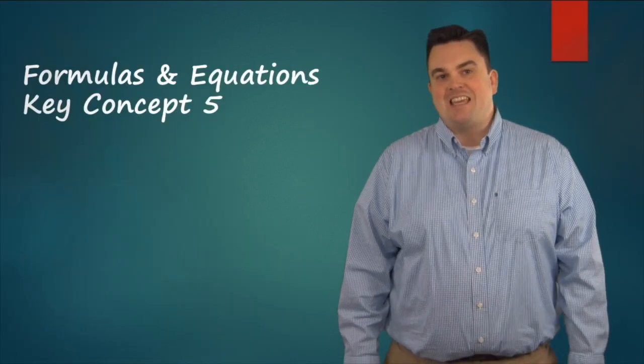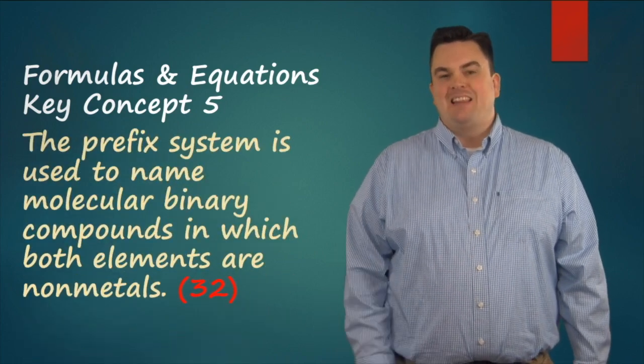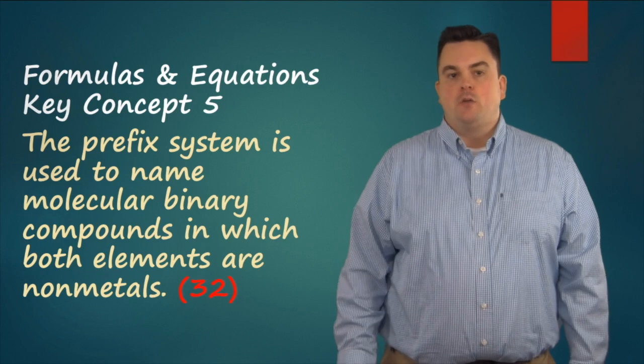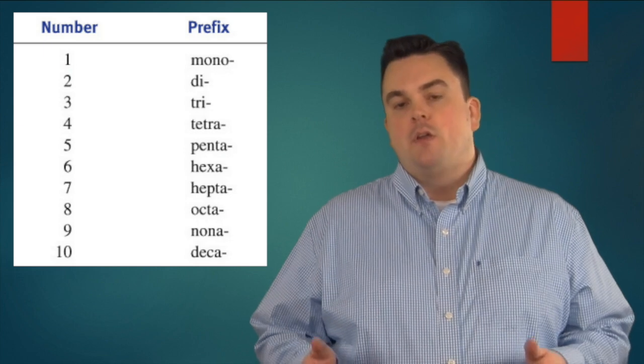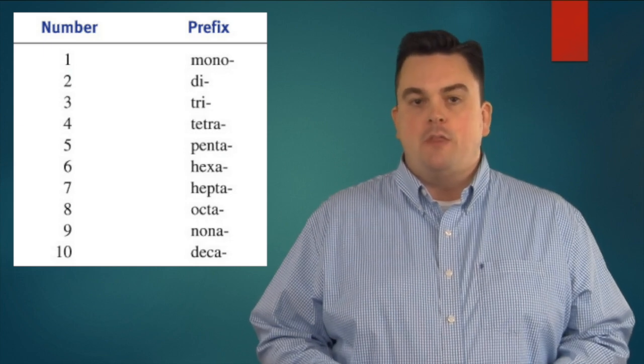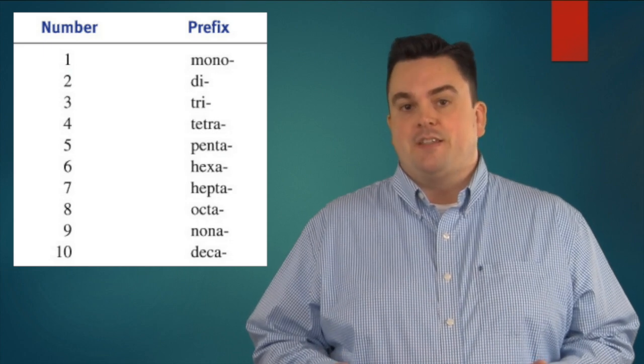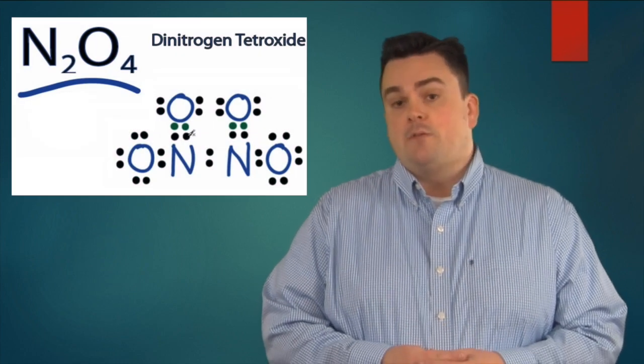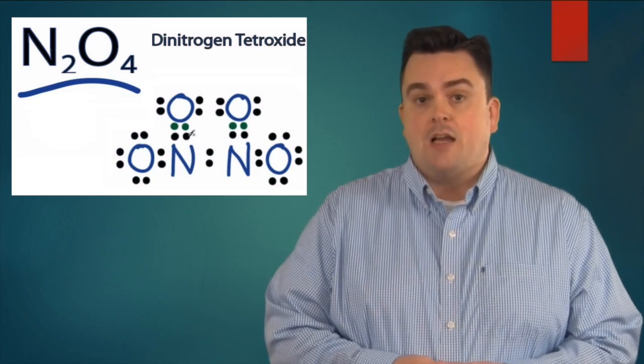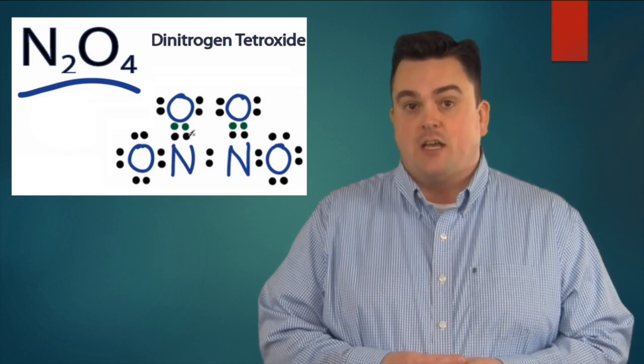Formulas and equations key concept 5. The prefix system is used to name molecular binary compounds in which both elements are non-metals. So once you've established the fact that you have two non-metals and you know that it's a covalent or molecular substance, you have to use prefixes to name it. For example, if we have N2O4, we have two nitrogen and four oxygen atoms. We have to name this dinitrogen tetroxide.